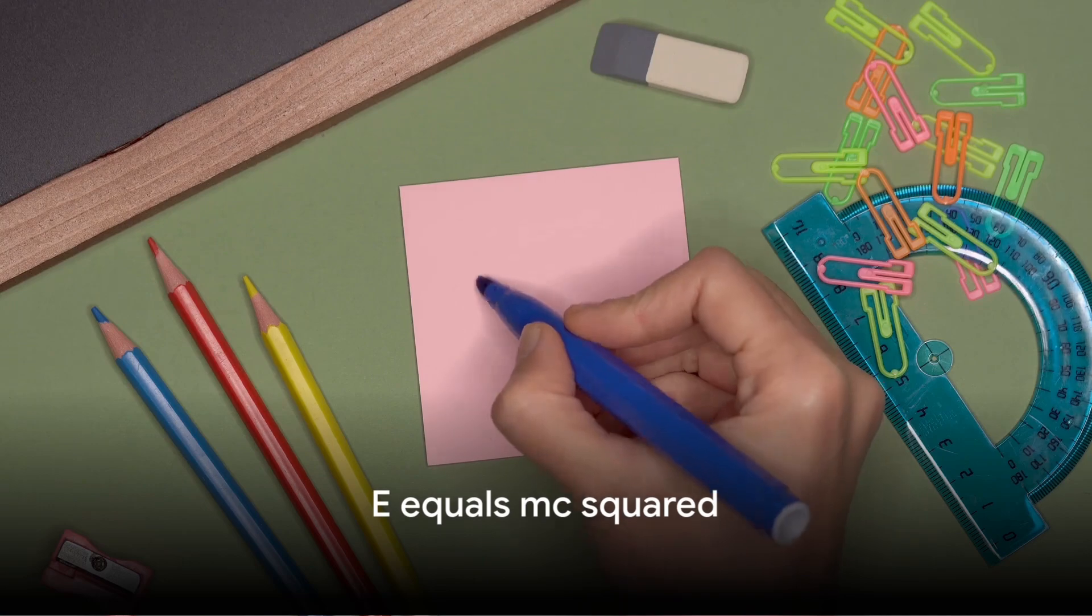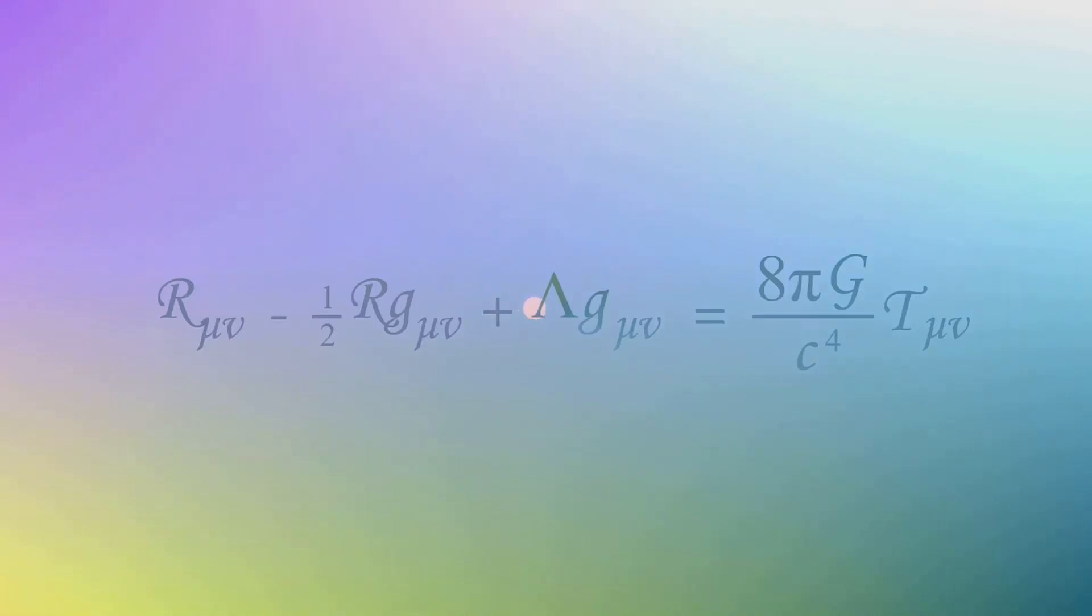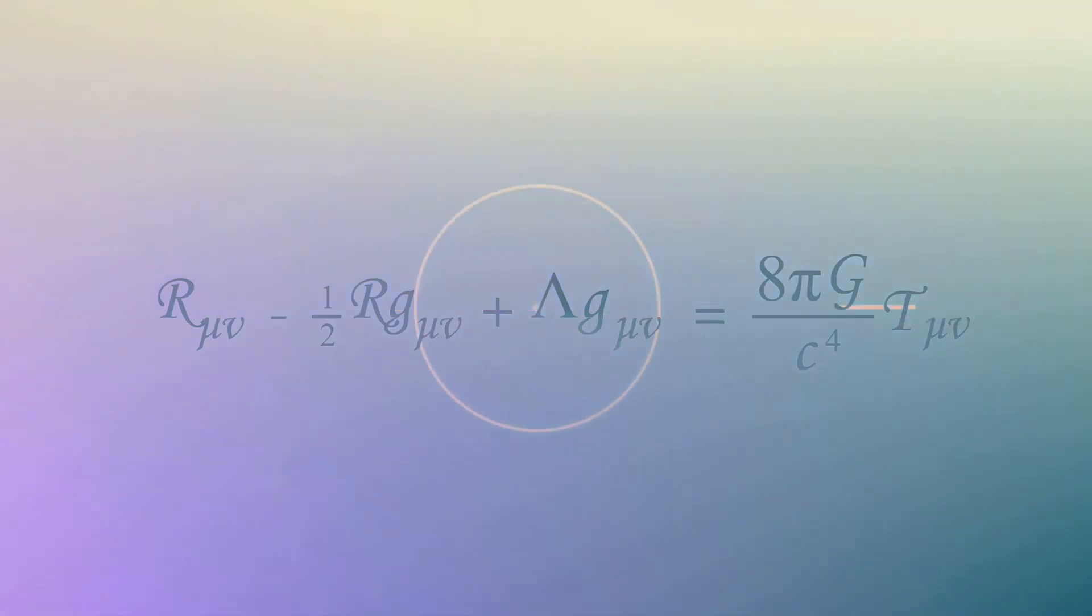Now, let's talk about the most famous equation in the world, E equals mc squared. It is a direct result of the special theory of relativity. This equation tells us that mass and energy are interchangeable, that they are but two sides of the same coin.